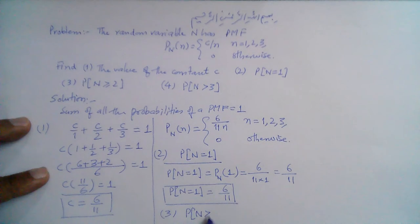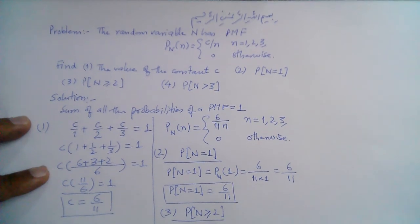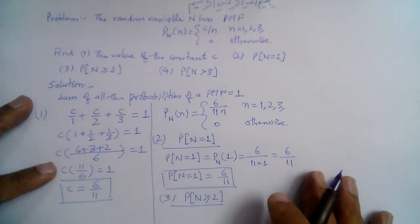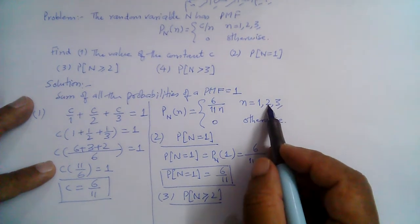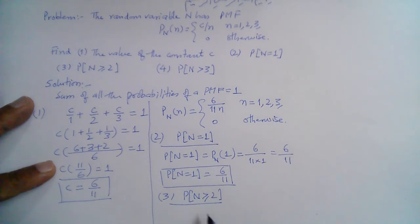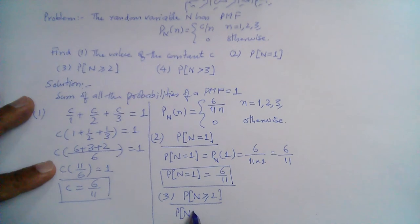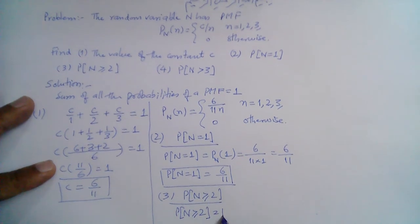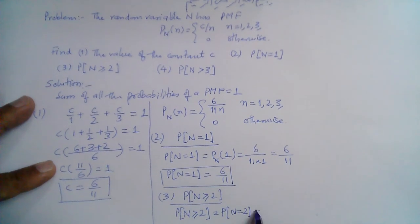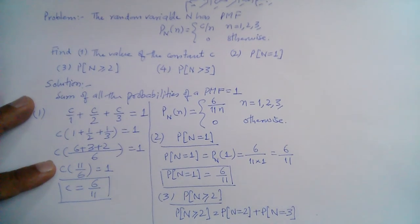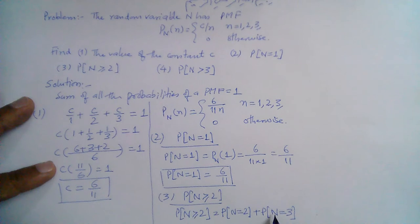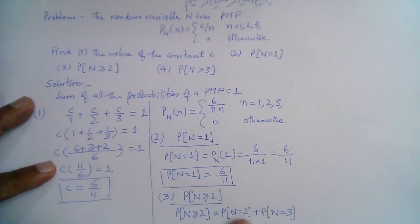For part 3, the probability that N is greater than or equal to 2. Since n can only take values 1, 2, and 3, greater than or equal to 2 means n equals 2 or n equals 3. So this equals the probability that N equals 2 plus the probability that N equals 3 — no other values are possible here.